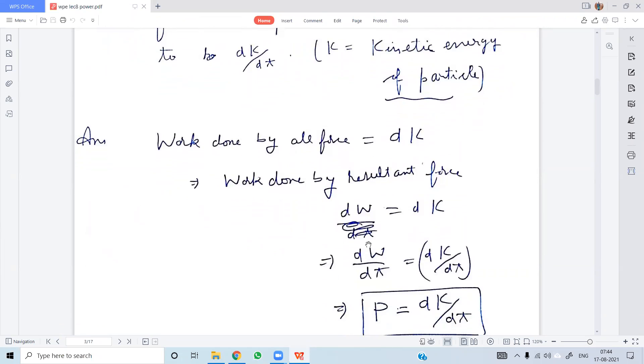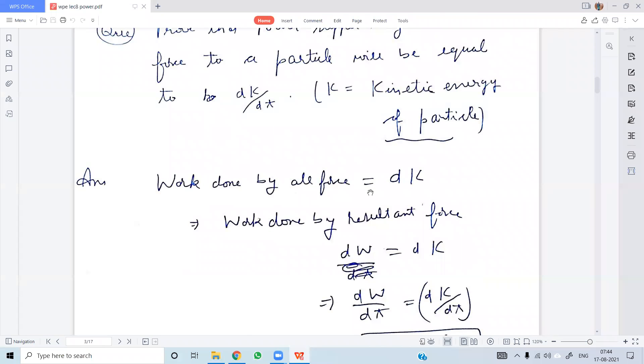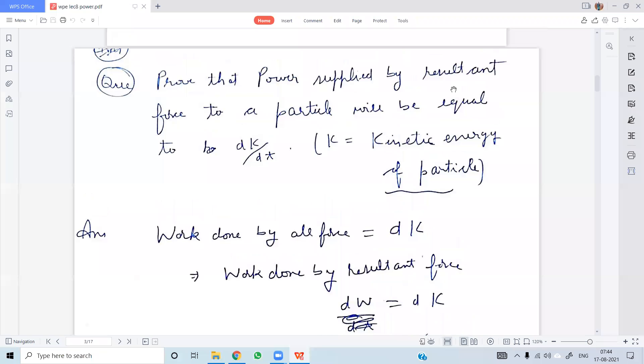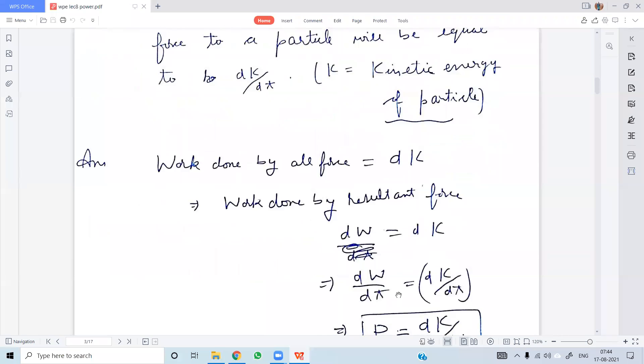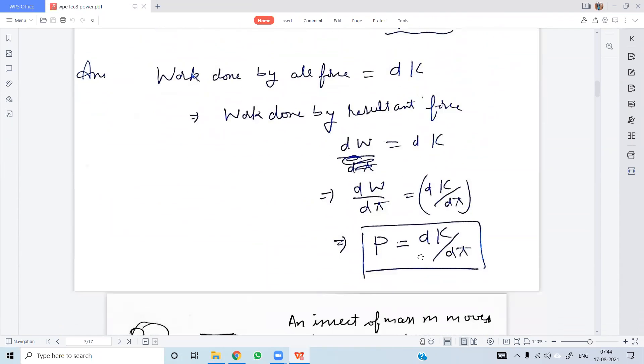Power supplied by the resultant force is the rate of change of kinetic energy. Power supplied by resultant force equals dW/dt, which is the kinetic energy rate. Power supplied by resultant force is correct.